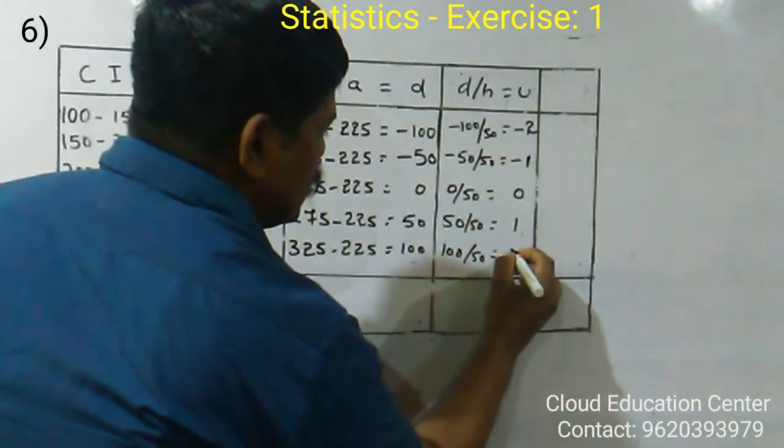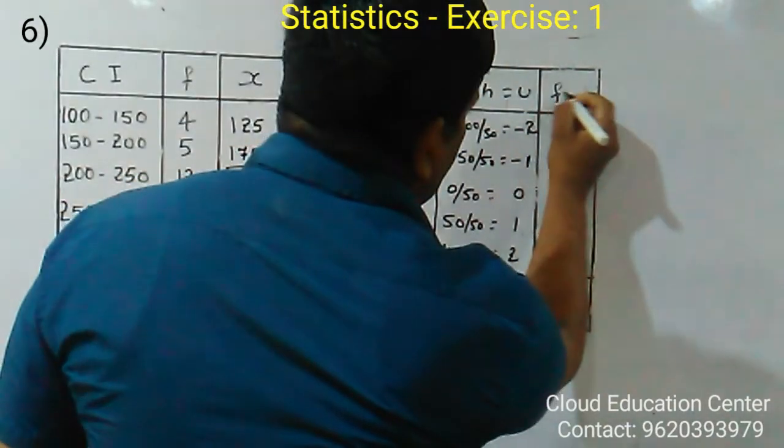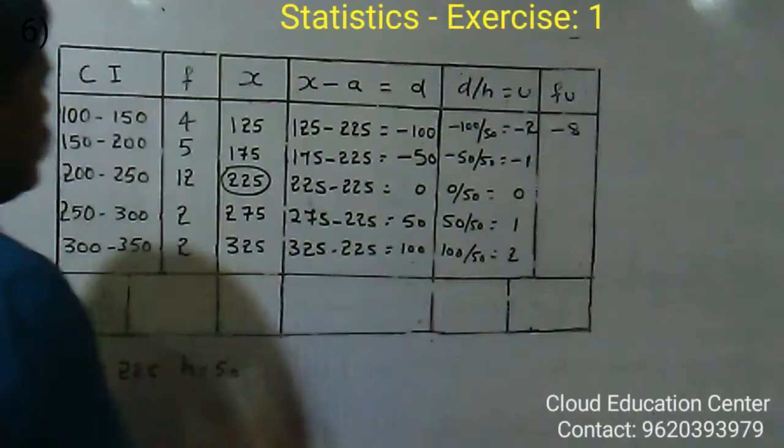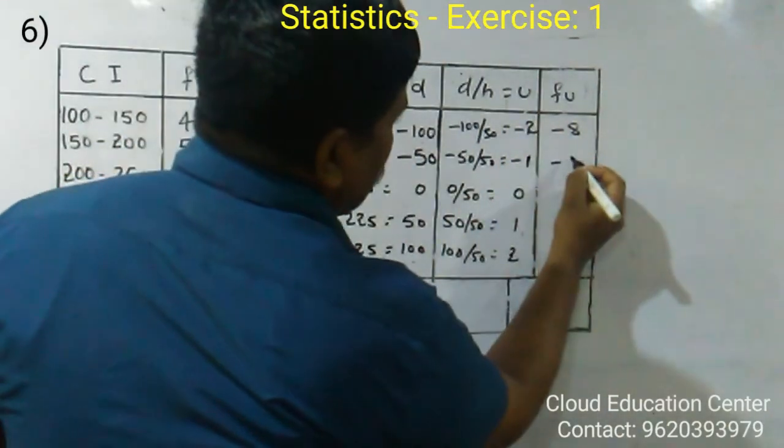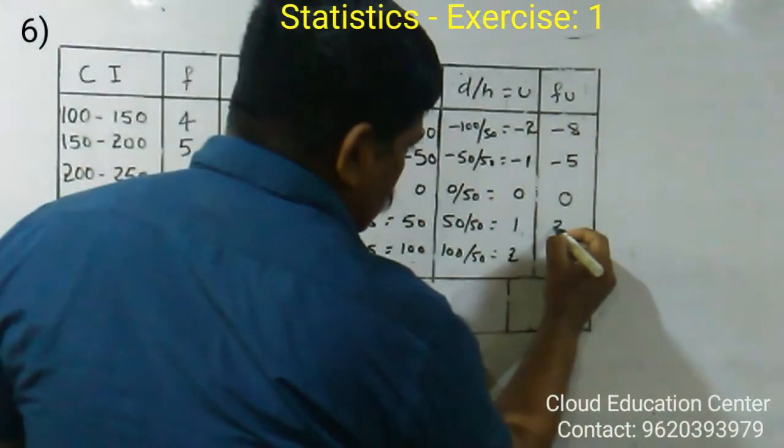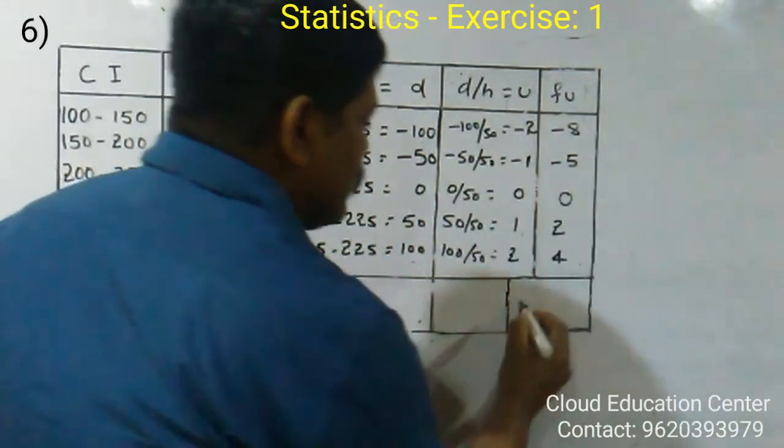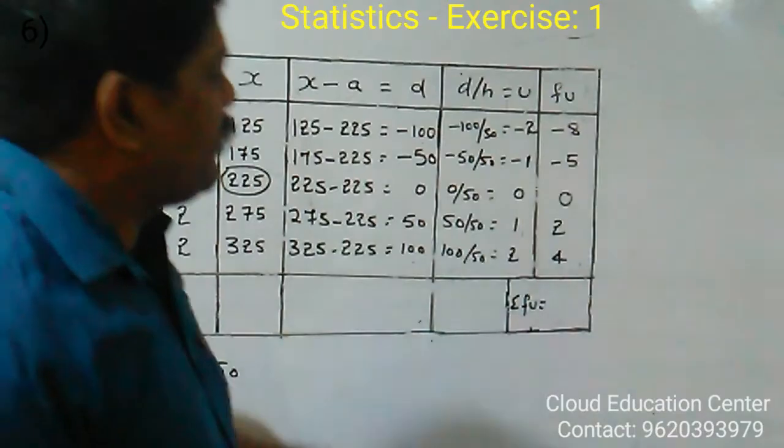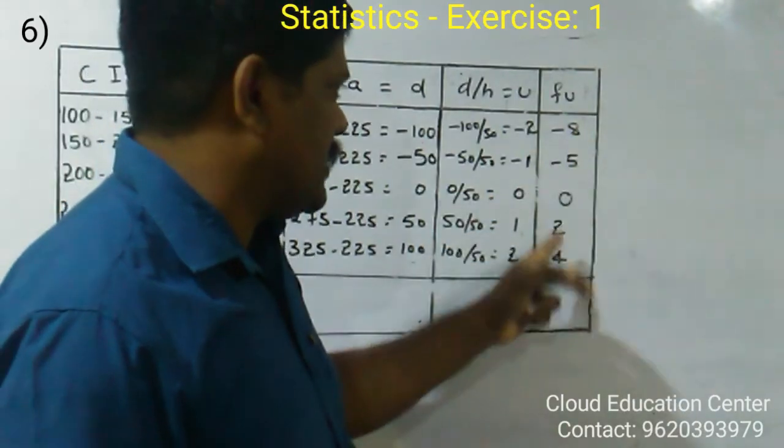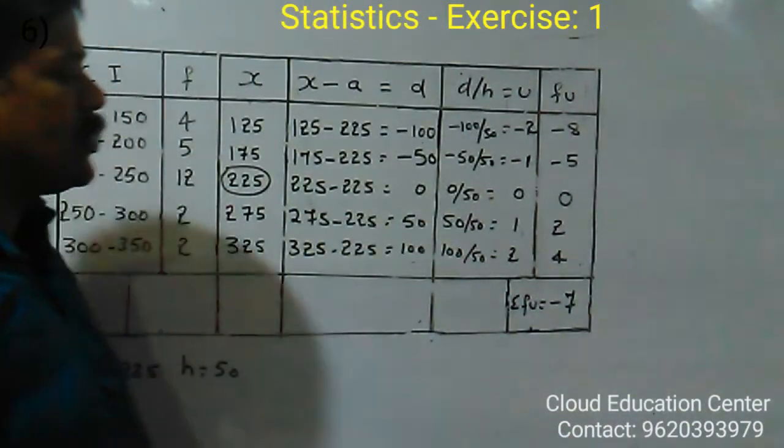Now you multiply this frequency to U. That is FU. 4 into minus 2 is minus 8. And 5 into minus 1 is minus 5. 12 into 0 is 0. 2 into 1 is 2. 2 into 2 is 4. Now you add this one. You take it as sigma FU. Here 2 plus 4 is 6. Minus 8 plus 6 is minus 2. Minus 2 plus minus 5 is minus 7. So sigma FU is equal to minus 7.